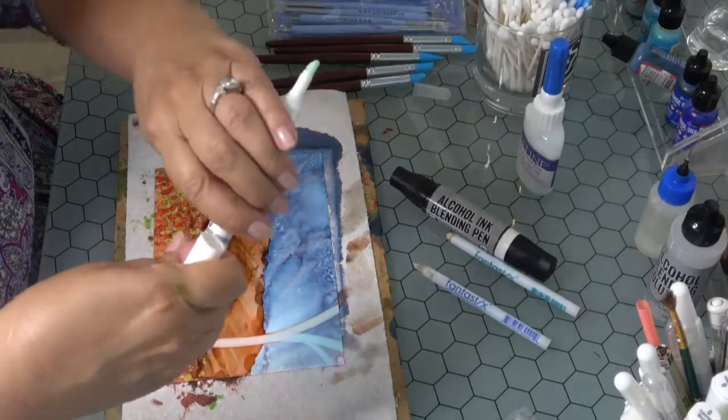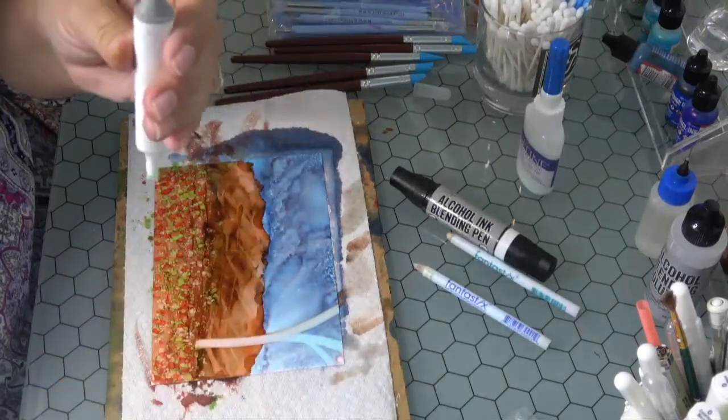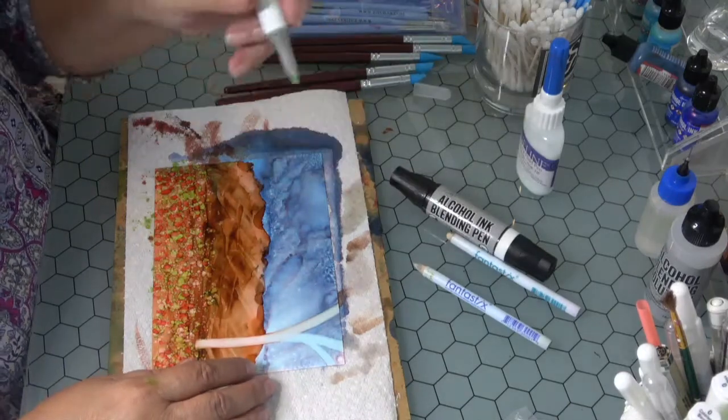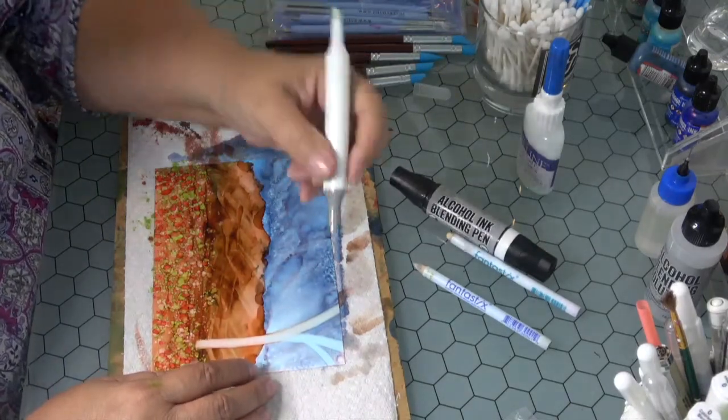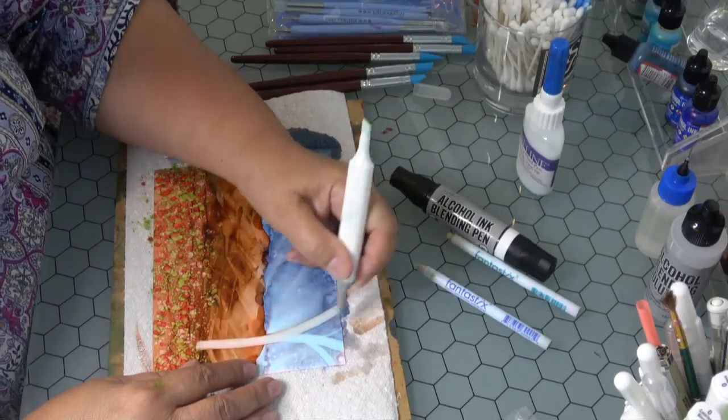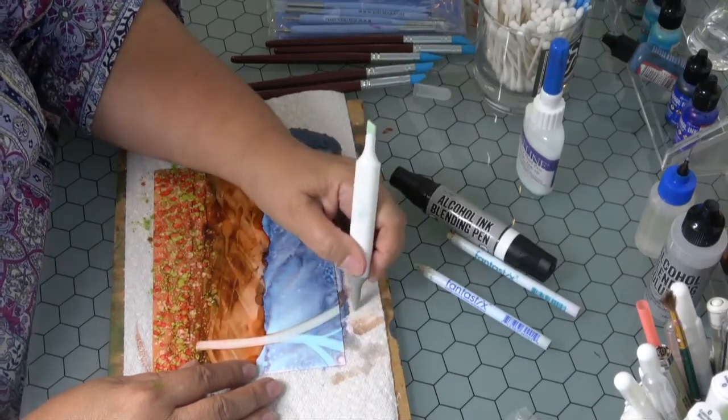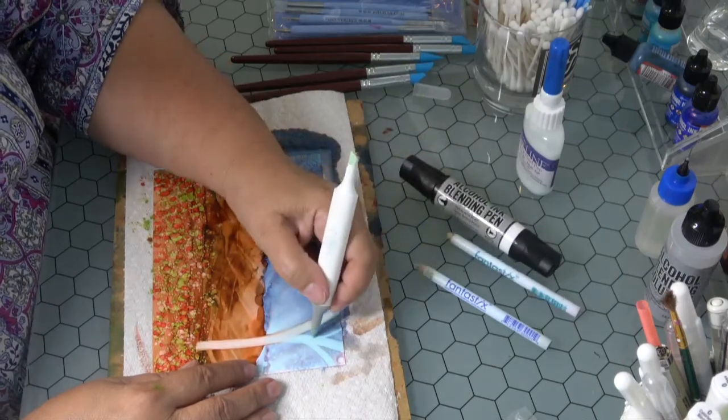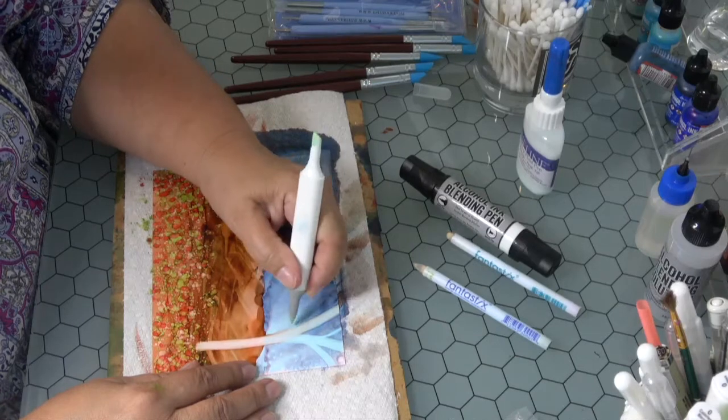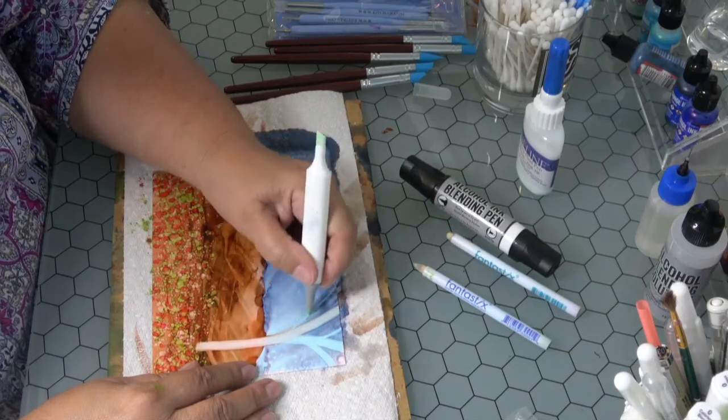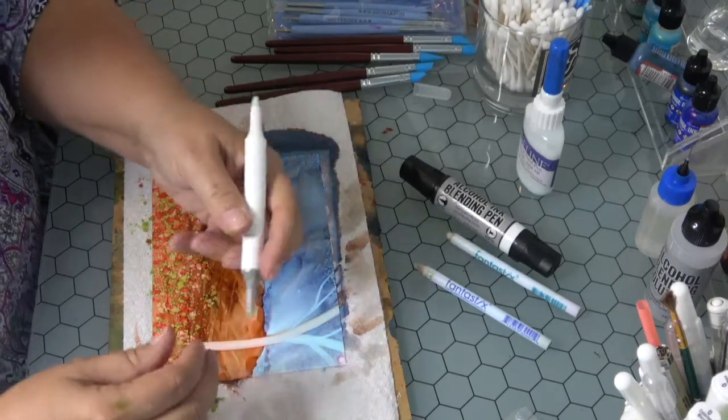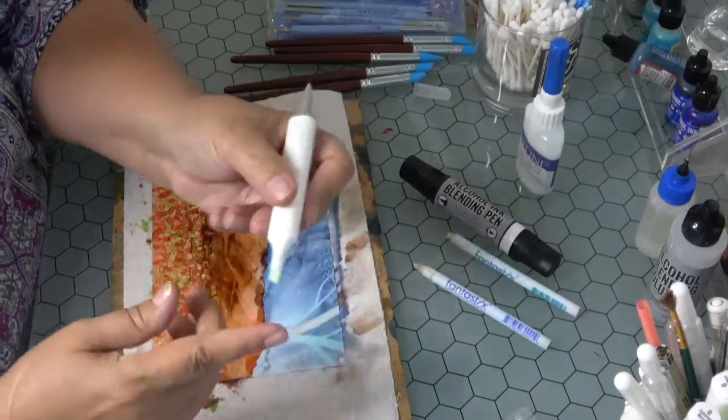So when you twist the cap off you're going to see the tips. There's the broad, here's the narrow. This does the same thing but I don't dip it into alcohol, it's already got the alcohol in there. So I can take the tip and just remove the alcohol and then I usually dab it on my paper towel.